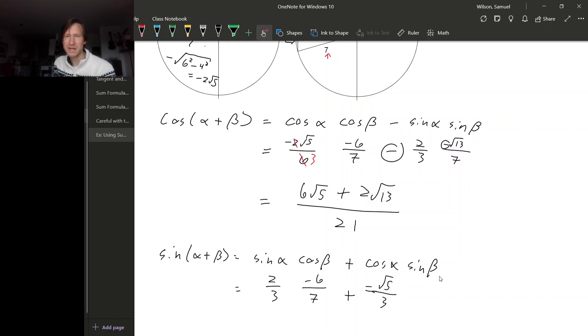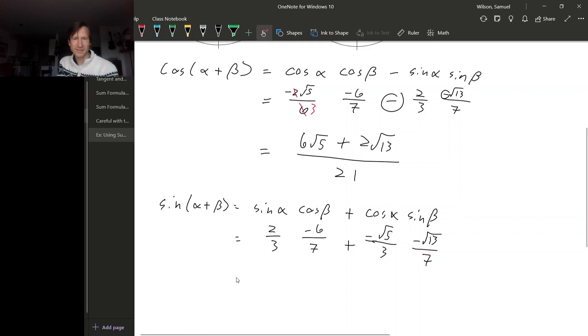And then sin(β) was -√13/7. And then we can simplify this. So looks like we're going to get -12 from this piece, plus √5 × √5 × √13, that's √65, over 21. And there we go, we found cosine and sine of α + β.